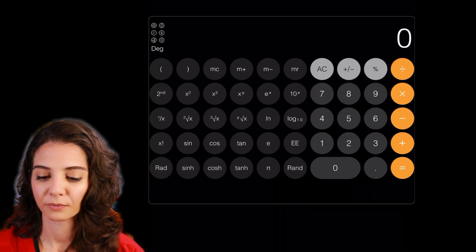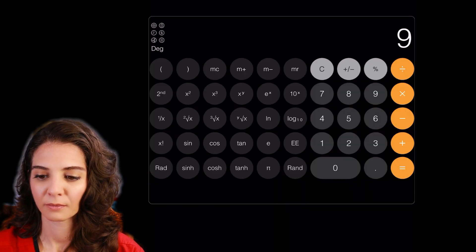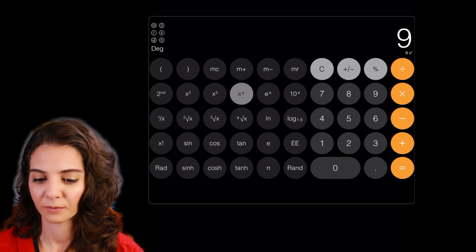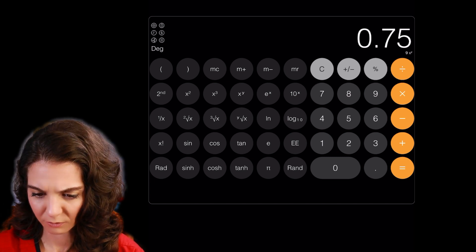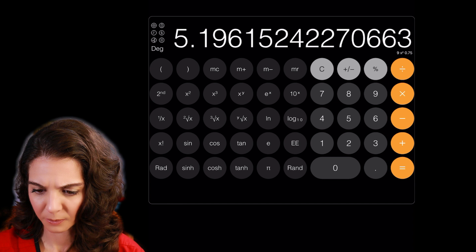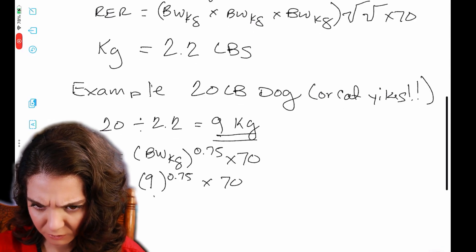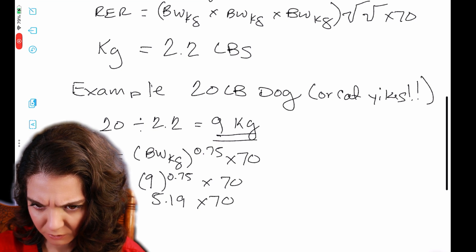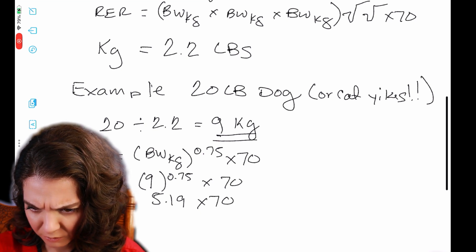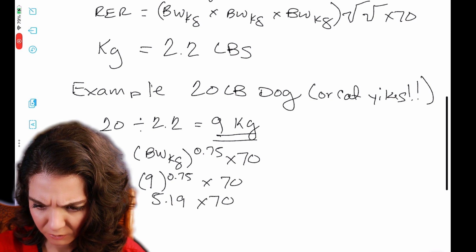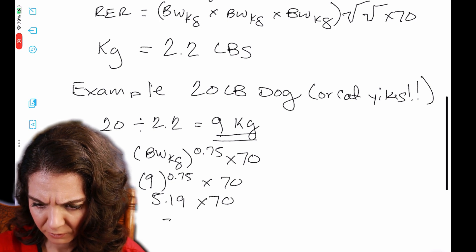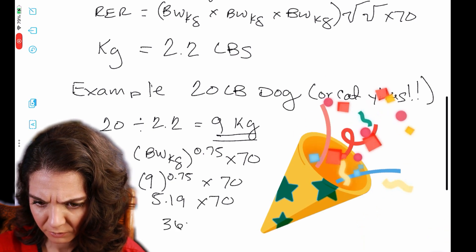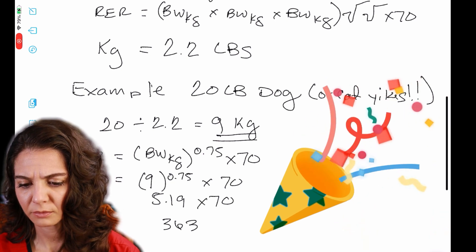Let's see nine and then use this little button over here, which is the exponent. So to the 0.75 equals 5.196. Okay. Stay with me here. I know I look like I am really thinking hard, but you just simplify the equation down. So 5.19 times 70 is the resting energy requirement, which is 363.